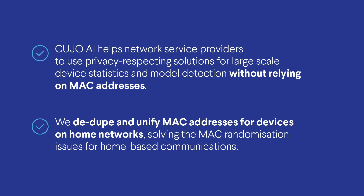Kujo AI is here to help network service providers that want to use privacy-respecting solutions for large-scale device statistics and model detection without relying on MAC addresses. We can de-dupe and unify MAC addresses for devices on home networks and solve the MAC randomization issues for home-based communications. Our AI-based device intelligence solution is based on network metadata analysis.